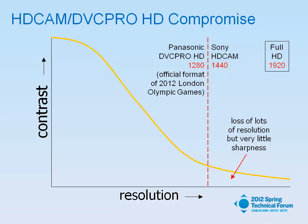So here's a compromise. Those of you in production may be familiar with HD Cam or DVC Pro HD. DVC Pro HD is the official format of the 2012 Olympics in London, so this compromise is relatively acceptable. Full HD is 1920 pixels per line. Sony's HD Cam only gives you 1440, throwing away a quarter of the resolution. DVC Pro HD only gives you 1280, throwing away a third. But it's throwing away the high-frequency resolution over here while retaining the bulk of the area under the curve. So you haven't really tampered with the sharpness — you can get rid of a lot of resolution and retain sharpness.